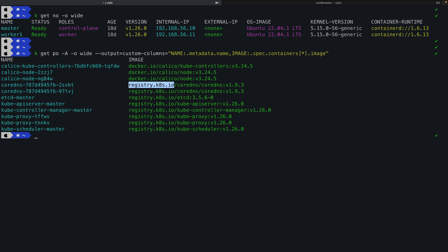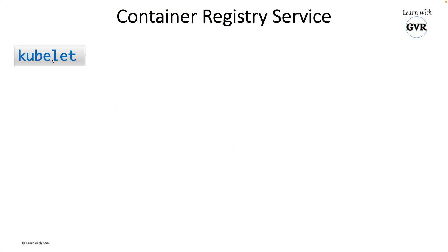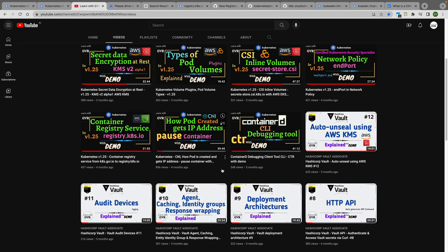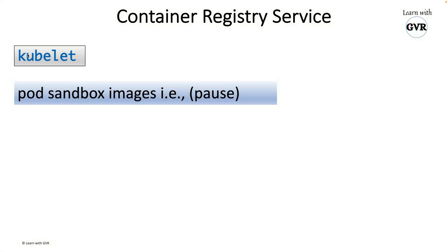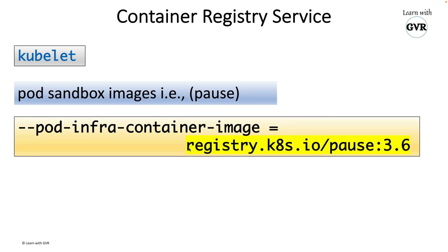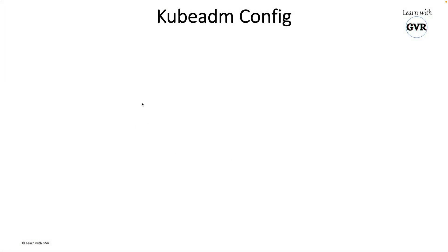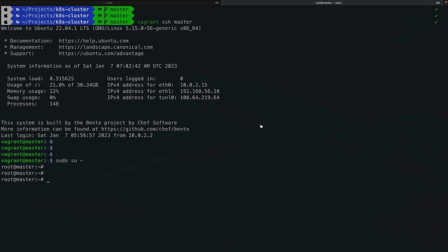Every worker node has a kubelet. With a thousand worker nodes, each kubelet handles pod creation and internally uses a pod sandbox base image — the pause container. I have a detailed video on the pause container in my channel. This pause container is also pulled from registry.k8s.io/pause:3.6. You can see the parameter in the kubelet documentation as 'pod-infra-container-image', and you can override it if needed.